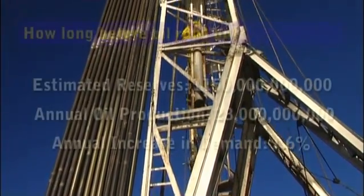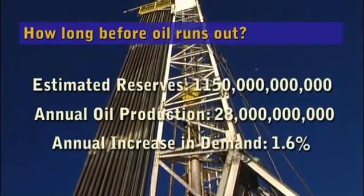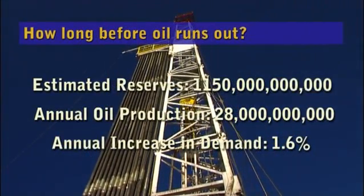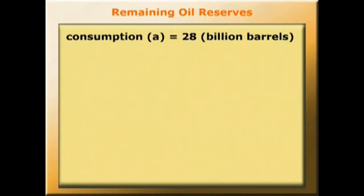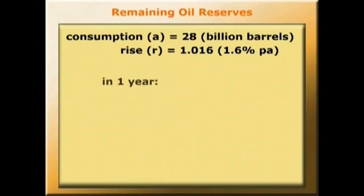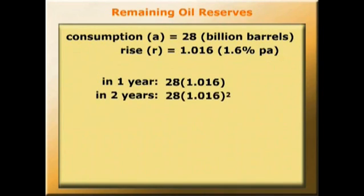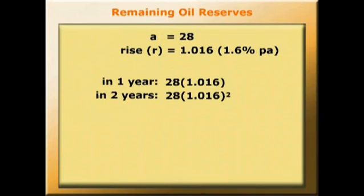Then what does our mathematics tell us is the amount of time we've got left before the oil runs out? Year one consumption is 28 billion barrels, but it's rising currently by 1.6% per annum. So in one year's time it'll be 28 times 1.016; in two years' time, 28 times 1.016 squared, etc. So we've got N terms of a geometric series with A equals 28 and R equaling 1.016.